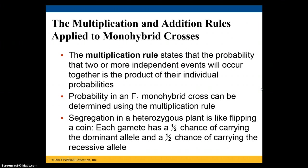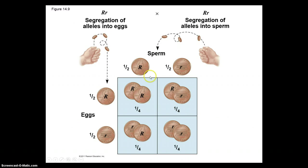The multiplication rule tells us that the probability of two or more independent events occurring together is the product of their individual probabilities. In an F1 monohybrid cross, each gamete has a one-half chance of carrying the dominant allele and a one-half chance of carrying the recessive allele. So one-half times one-half gives you one-quarter — a one in four chance for each genotype combination.